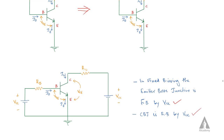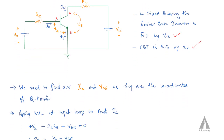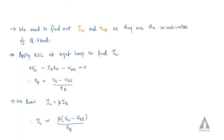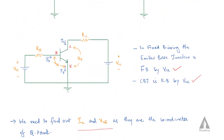We need to find the Q-point coordinates. The Q-point coordinates are IC and VCE. To find IC, we apply Kirchhoff's Voltage Law at the input loop. Everyone should apply KVL at the input loop.